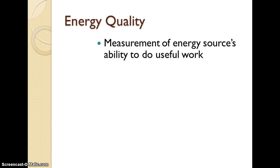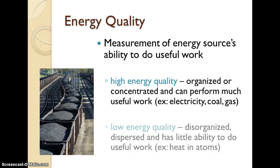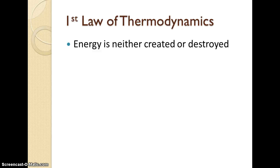The quality of energy describes its ability to do useful work. If it's high energy quality, it's concentrated enough that we can convert it into electricity — examples would be coal or gas. Low energy quality means it has very little ability to do work; it's more disorganized and more dispersed. Heat would be the best example of low energy quality.